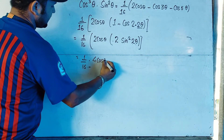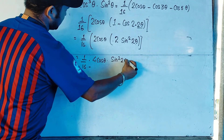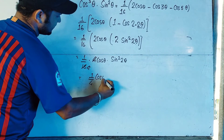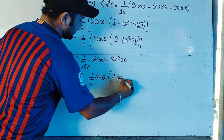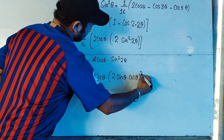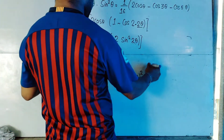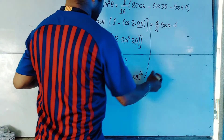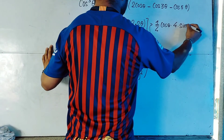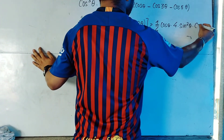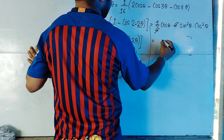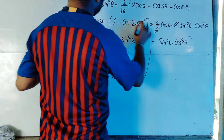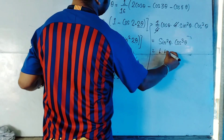We multiply to get 1/16 times 4cosθ times sin²(2θ). Now we expand sin2θ = 2sinθcosθ, and since we have sin²(2θ), we write (2sinθcosθ)² = 4sin²θcos²θ. The expression becomes 1/16 times 4cosθ times 4sin²θcos²θ. The 16 and 16 cancel, leaving sin²θ·cos³θ, which is our left-hand side. Hence proved.